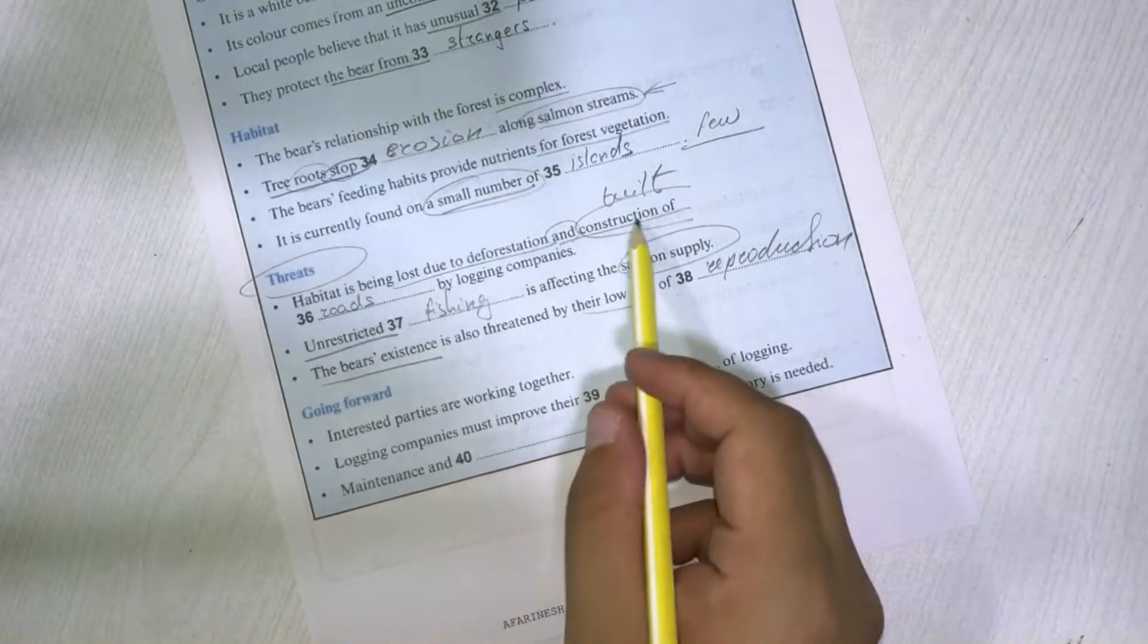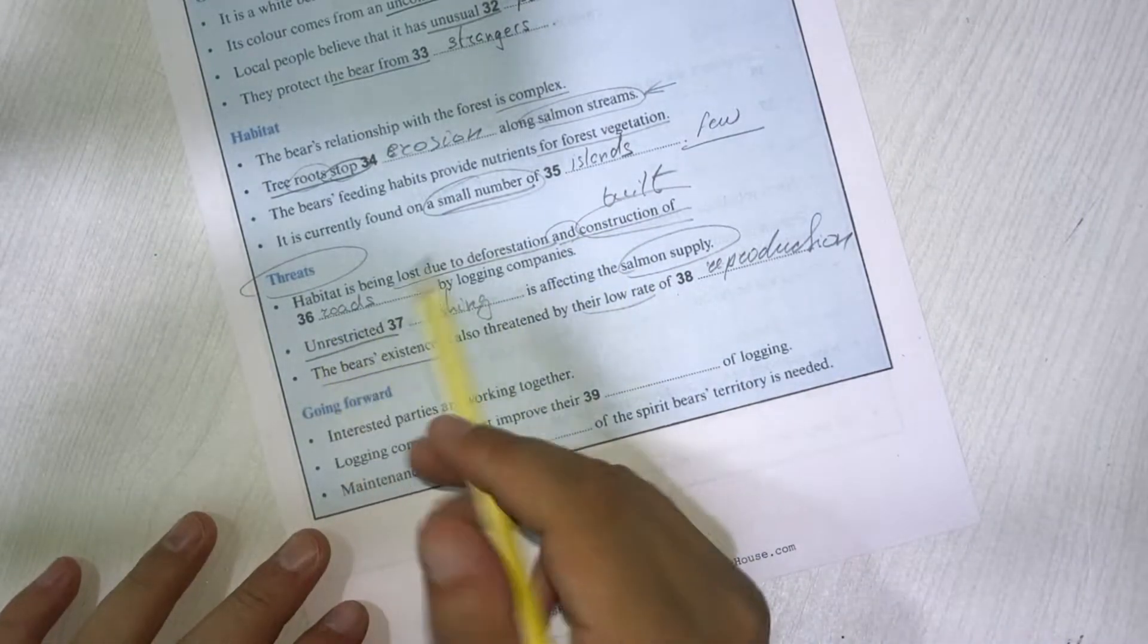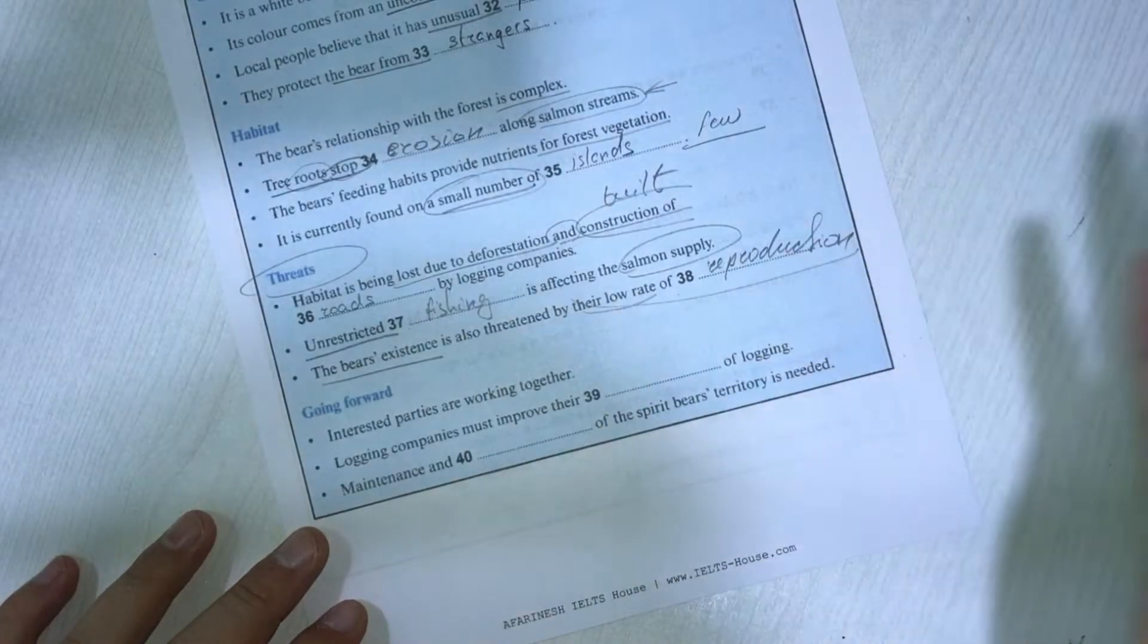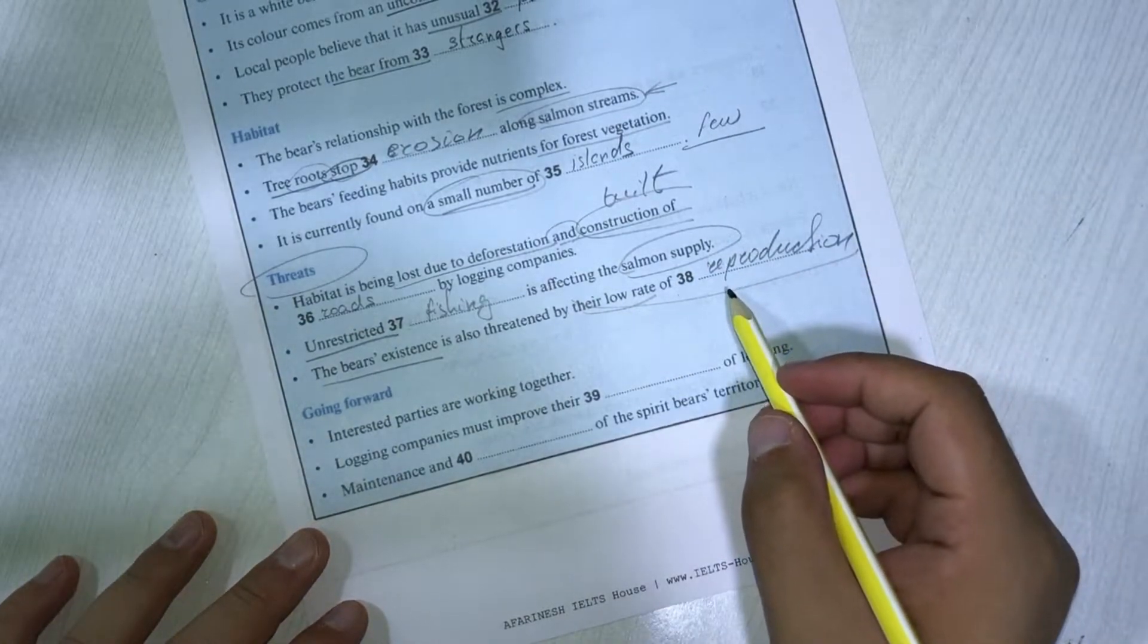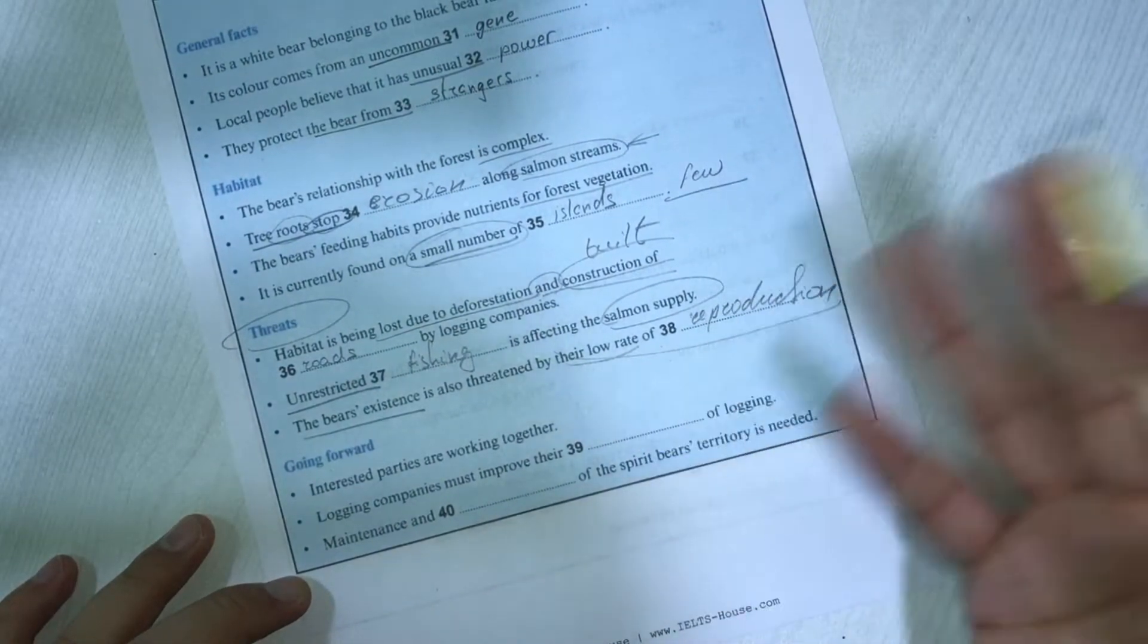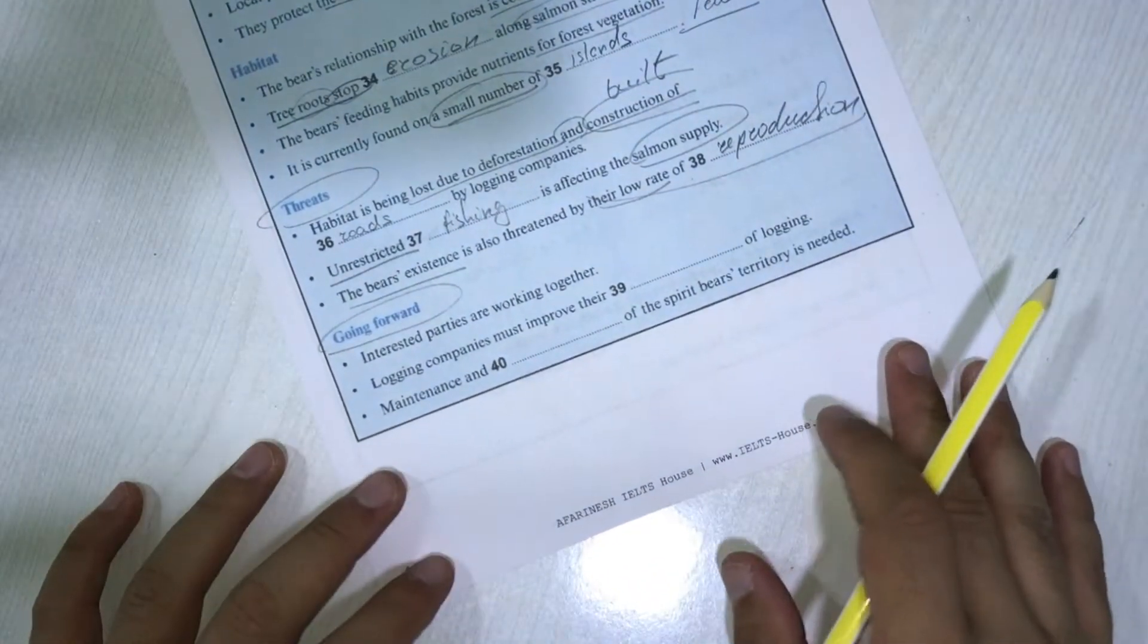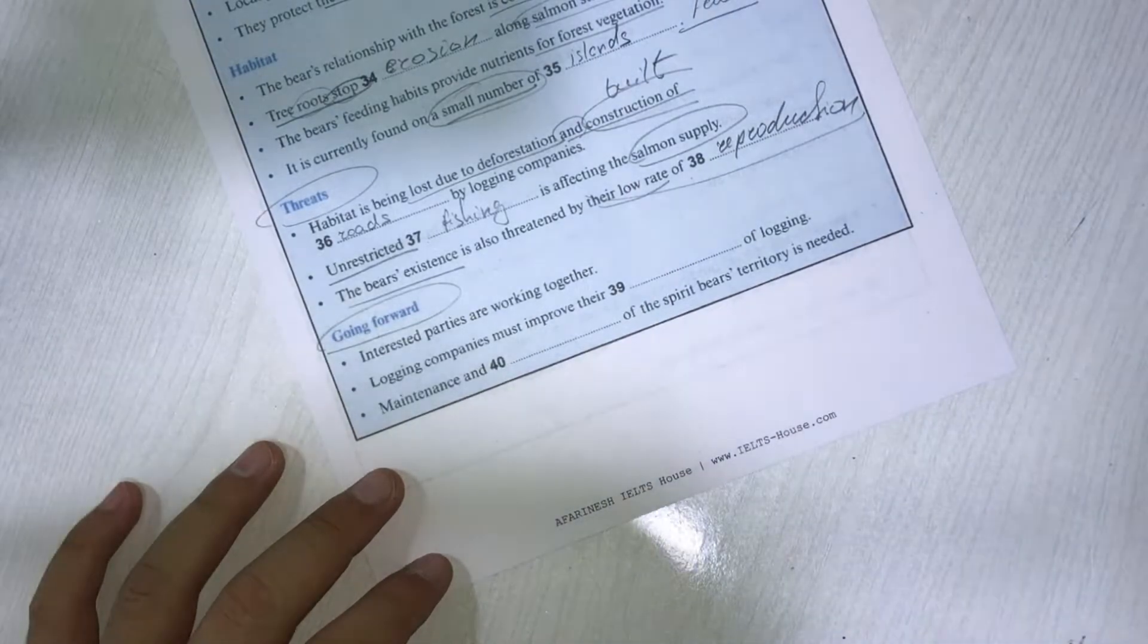As you can see, it said build the road instead of construction, and instead of restricted, it said unlimited, which means there is no limit on fishing. And then it says low fertility rate. Low fertility rate means low reproduction, that they don't bear children as often as they need offspring. That's a problem for them. Now I'm going to listen to the going forward part and try to show you how to do it with some easy ways. Alright, now I'm playing the video.